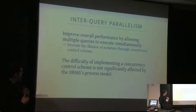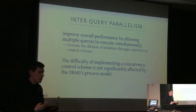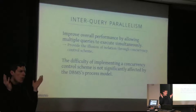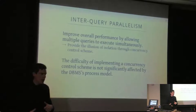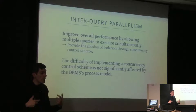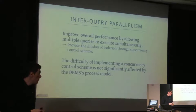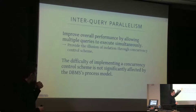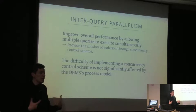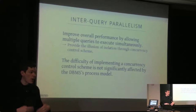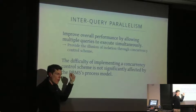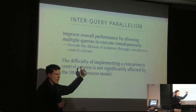There are two types of parallelism we want to achieve. The first is inter-query parallelism: improving overall performance by allowing multiple queries to execute simultaneously. Multiple application threads invoke transaction requests at the same time, and we want the database to execute them concurrently rather than sequentially. This is where concurrency control comes in — we allow queries to execute simultaneously without corrupting each other, maintaining the illusion of isolation. There's not much new to say about scheduling for concurrency control since we've already covered it.